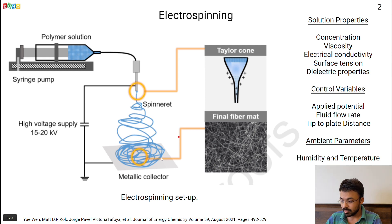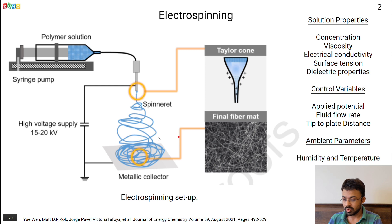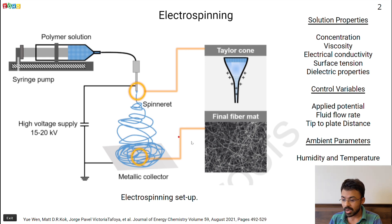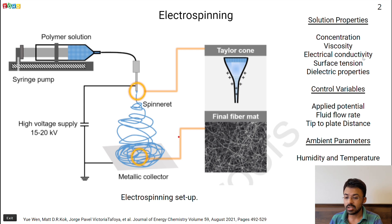Initially the jet is stable and then it becomes unstable because of the change in the viscoelastic property when the phase transition from the semi-solid to a solid phase occurs. The factors that affect the type of mat we get are the concentration of the solution, viscosity, electric conductivity, surface tension, and dielectric properties.